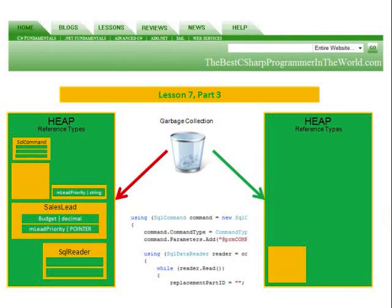The garbage collection process is focused on the heap. Whenever a method is completed, it removes that from the stack, and at the same time it could remove the pointers to maybe a SQL command object stored in the heap. Whenever classes or reference types are no longer pointed to from anywhere or are no longer needed, the garbage collection process will kick off and deallocate or reallocate any memory and clean everything up, removing things we no longer need from the heap and making that memory available for other processes.